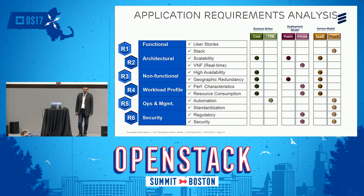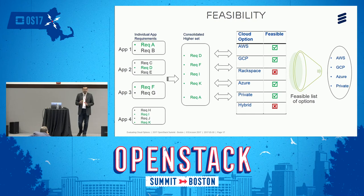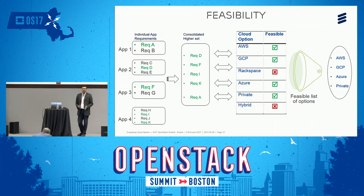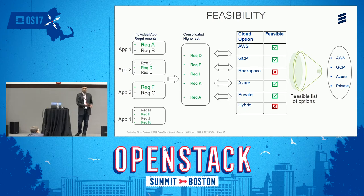As an example, for cloud-ready applications in the enterprise, performing requirement analysis produces a consolidated superset of requirements that must be fulfilled to migrate those applications to cloud. We can then identify which application requirements are not being fulfilled by a specific cloud option, applying a process of elimination to reduce the options that need further evaluation.